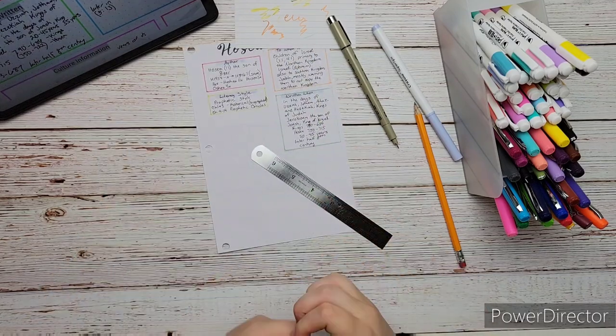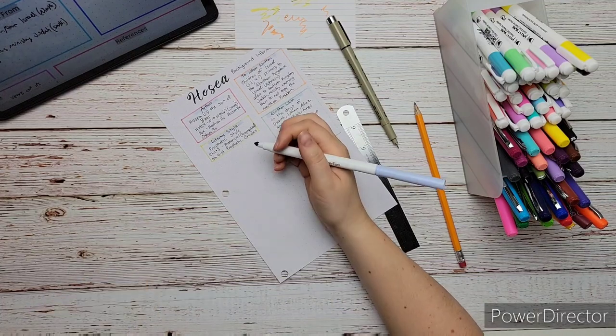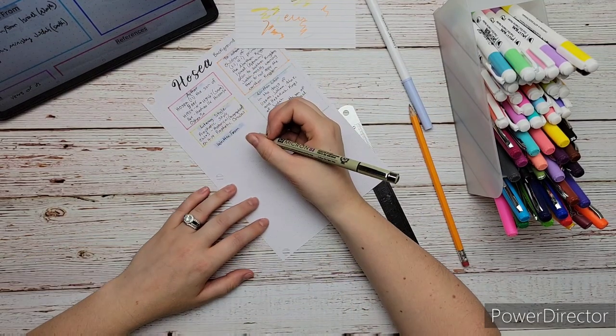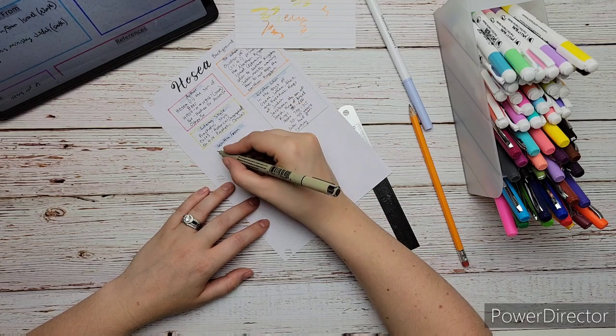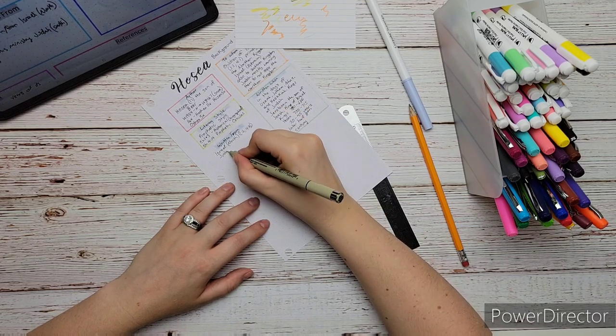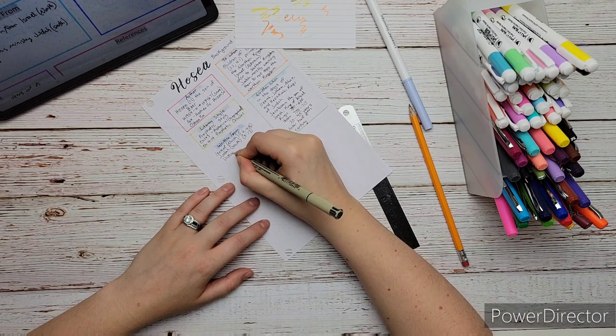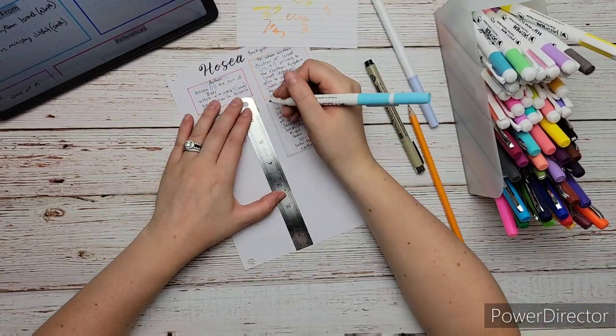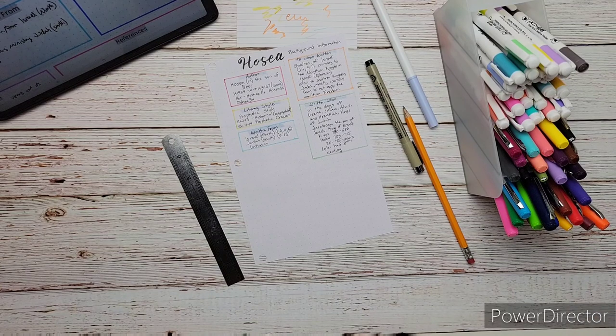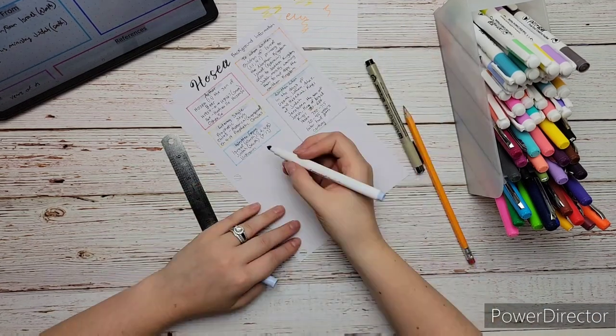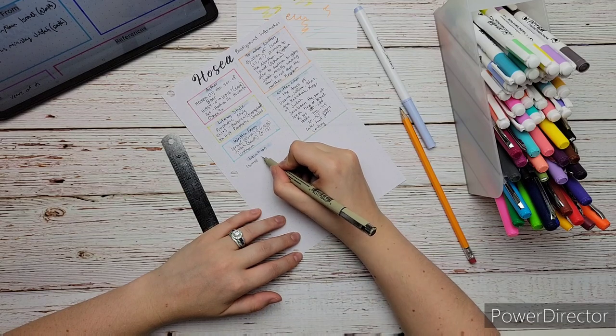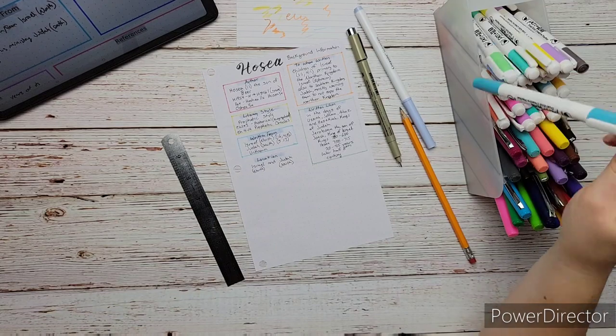And then where was it written from? So it was most likely written from Israel the northern kingdom and he could have also moved to Judah in the later part of his ministry because the northern kingdom was going to get conquered by Assyria. There's a little bit of different scholars say different things where it was written from but especially since he named the kings of Judah first in the beginning of the verse but we're going to just say that it was written from northern Israel. It's not too big of a deal if we don't know that. So the location is Israel and Judah so the entire land of Israel and Judah or Canaan basically the promised land of Israel from God.